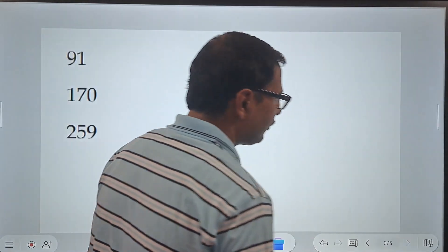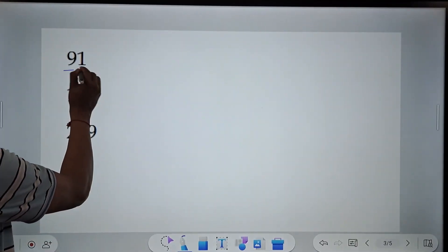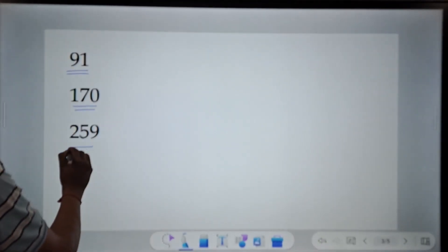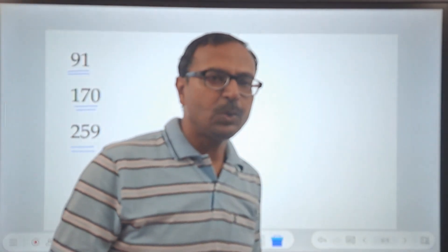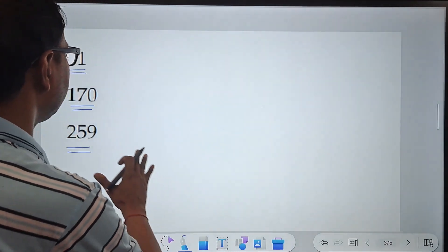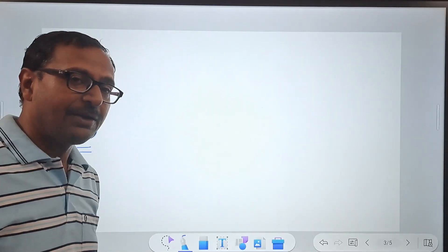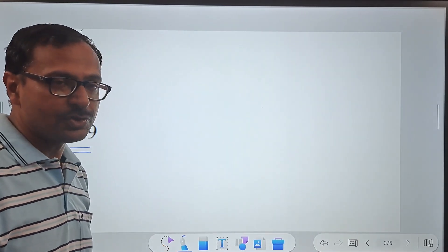So friends, what do we have in this video? There are some numbers written here: 91, 170, and 259. I need to convert these numbers into their Roman equivalent. Now, how do we convert it into Roman equivalents? You should know the basics obviously. And if you know the basics, this is not going to consume much time.